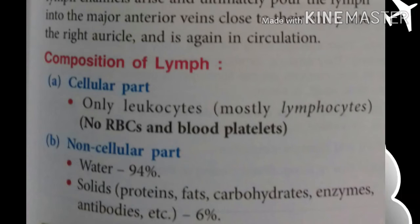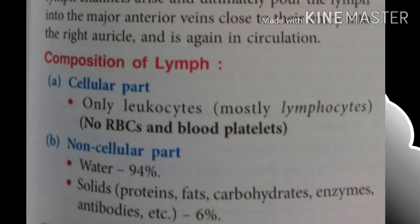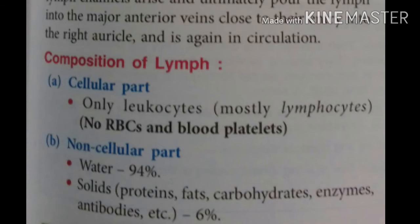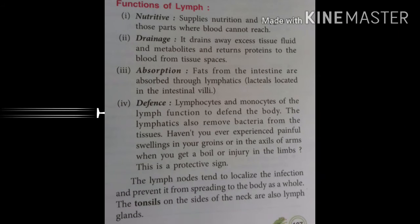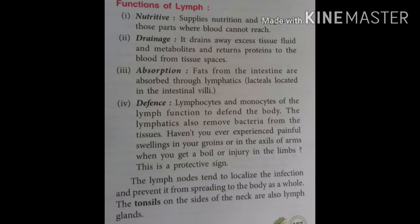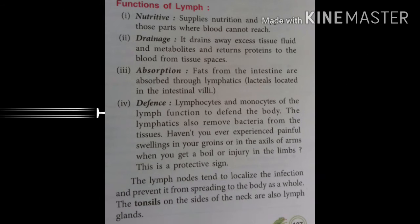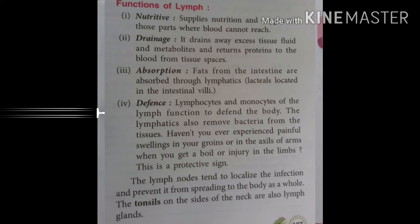The composition of lymph includes a cellular part and a non-cellular part. The cellular part consists only of leukocytes, mostly lymphocytes. RBCs and platelets are absent in lymph. The non-cellular part includes 94% water and 6% solids such as protein, fat, carbohydrate, enzymes, and antibodies.